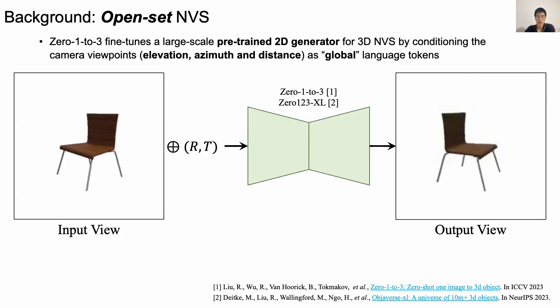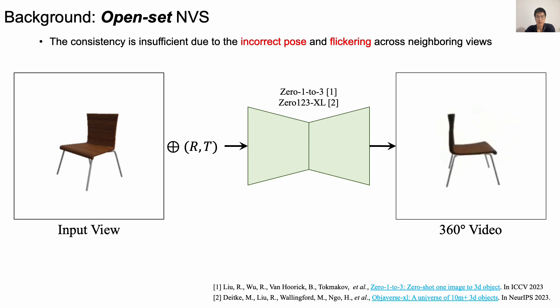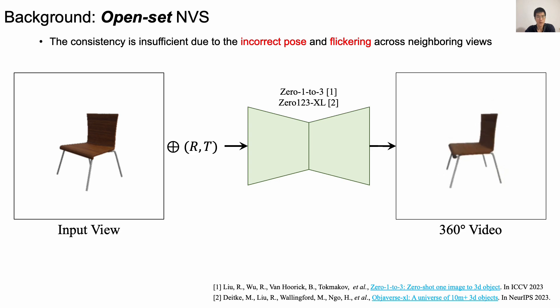To operate in an open-set setting, Zero-123 fine-tunes a large-scale pre-trained 2D generator for 3D novel-view synthesis by conditioning on camera viewpoints such as elevation, azimuth, and distance as global language tokens. While this model achieves good generalizability and can produce realistic novel views, Zero-123 fails to achieve high pose accuracy, and reconstructions are not consistent across views due to incorrect pose and flickering across neighboring views.